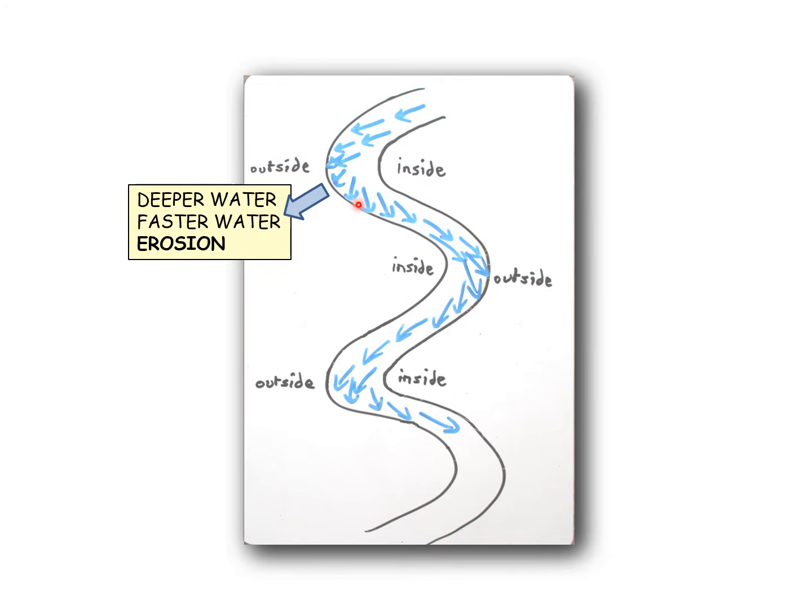Meanwhile, on the inside of the river bends, the water is being transported over to the outside, so there's less water here on the inside. It's going to be shallower. The water moves slower here, and where you've got slow moving water, rocks sink down to the bottom. So you've got deposition occurring on the inside of the river bend.